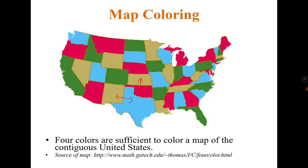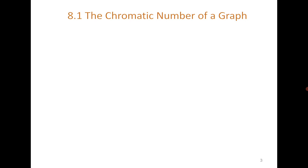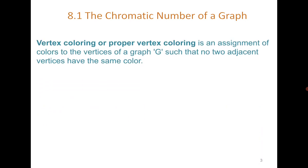This raises the problem of graph coloring. Vertex coloring, or proper vertex coloring, is an assignment of colors to the vertices so that no two adjacent vertices have the same color. For example, if you have a triangle and give colors 1, 2, 3, you can see that all adjacent vertices have different colors.